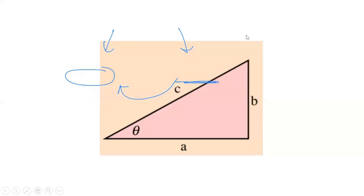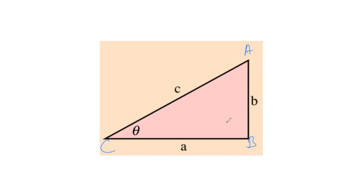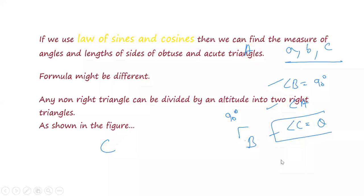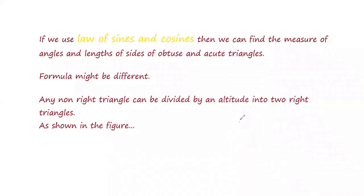Now, if you look at this triangle — suppose triangle ABC in which angle B is 90 degrees — we have three sides: side A, side B, and three angles. Angle B is 90 degrees, angle A we have, and angle C which equals theta. So we have three angles here.